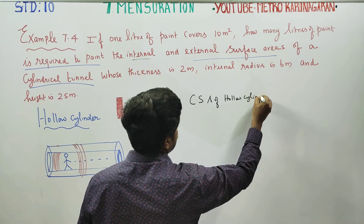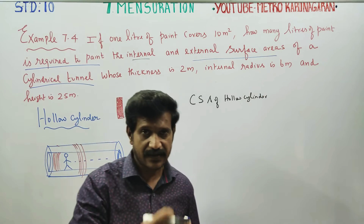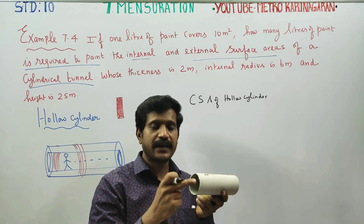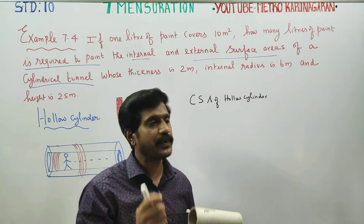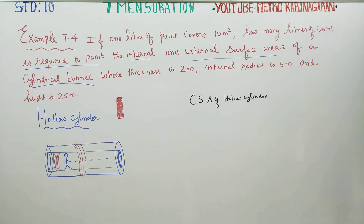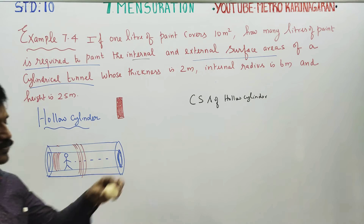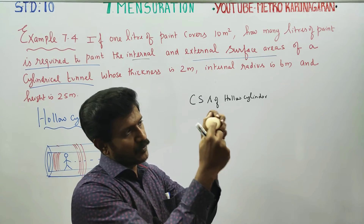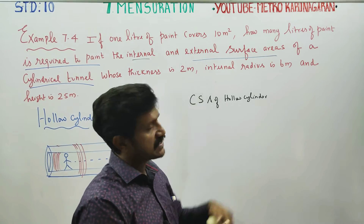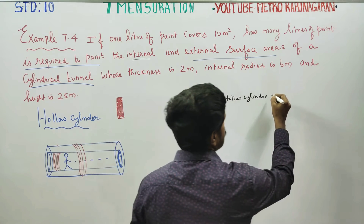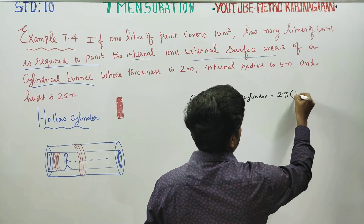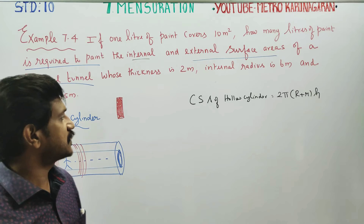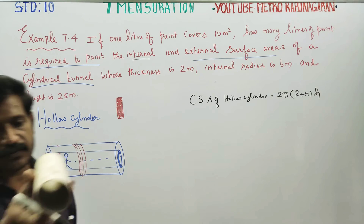The external side and internal side both need to be painted. For a hollow cylinder, we paint both the outer and inner curved surfaces. The CSA formula is 2πRh for the outer surface and 2πrh for the inner surface, so the total is 2π(R + r)h.